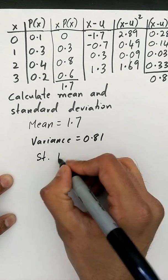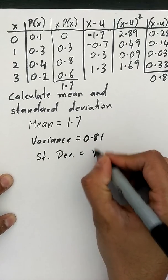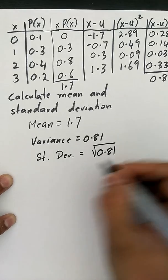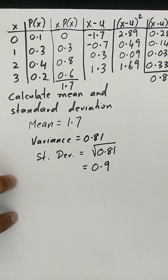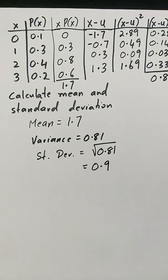If you want to find our standard deviation, we just square root our variance: 0.146, which is basically 0.9.